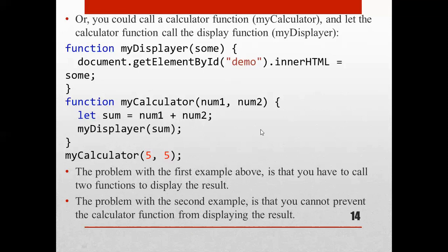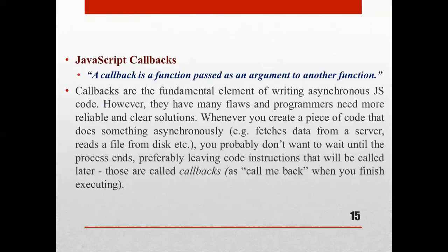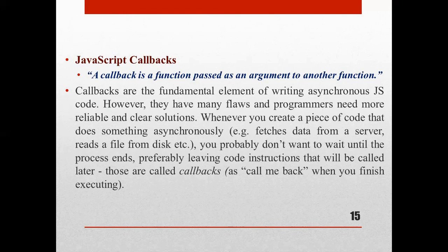A callback is a function passed as an argument to another function. Callbacks are the fundamental elements of writing asynchronous JavaScript code. However, they have many flaws and programmers need a more reliable and clear solution. Whenever you create code that does something asynchronously — like fetching data from a server or reading a file from disk — you probably don't want to wait until that process ends, so you leave code instructions to be called later.